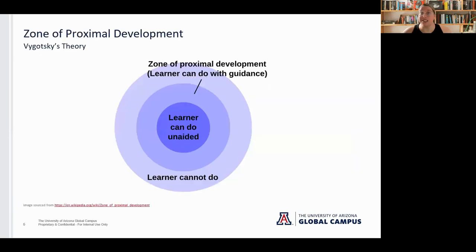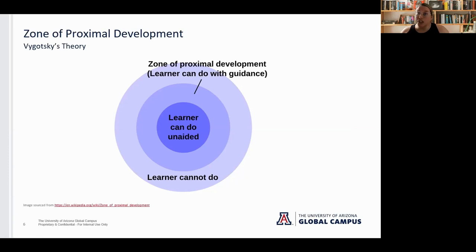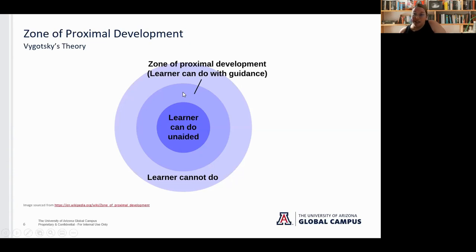So the Zone of Proximal Development is Vygotsky's theory. If you think about what a learner can do unaided — my daughter wants to get herself a bowl of vanilla yogurt. She can get the yogurt, the bowl, the spoon. What she cannot do is get the yogurt into the bowl without getting half of it all over the counter. So what I do in between is hold on to the container of yogurt and hand-over-hand help her scoop. Eventually, as she can scoop on her own, I remove that scaffold.